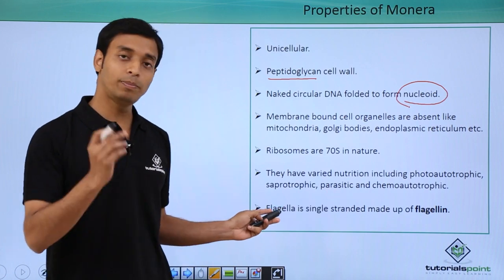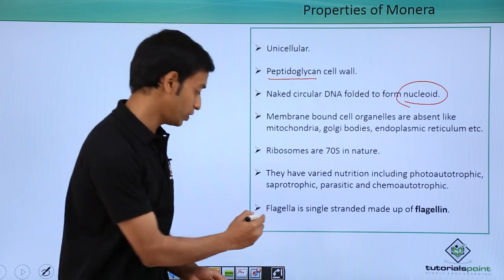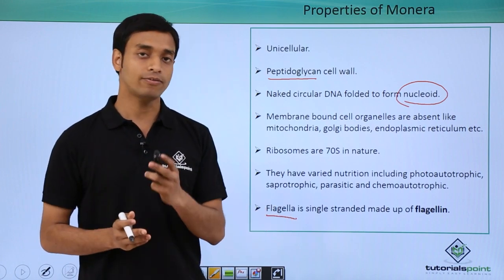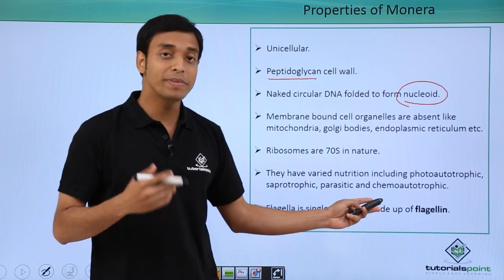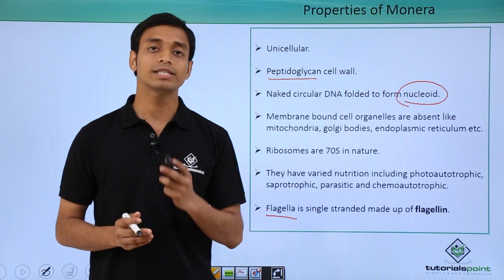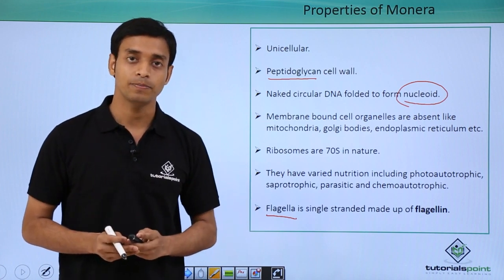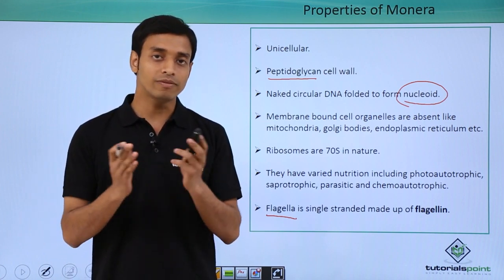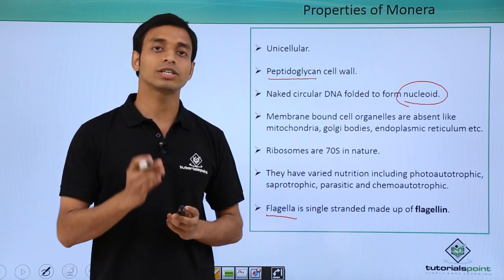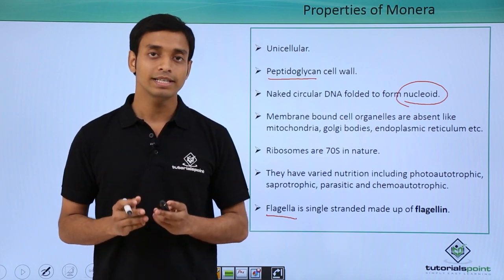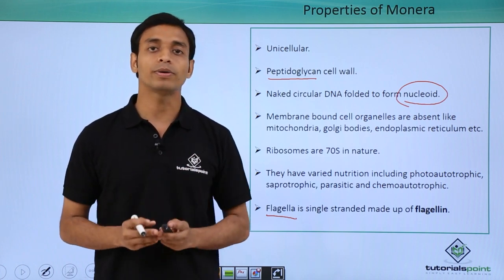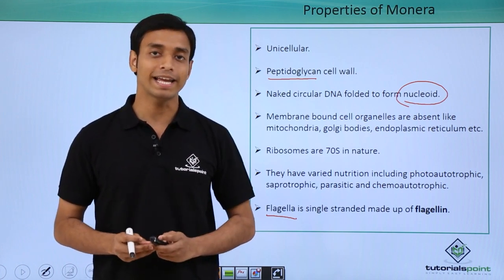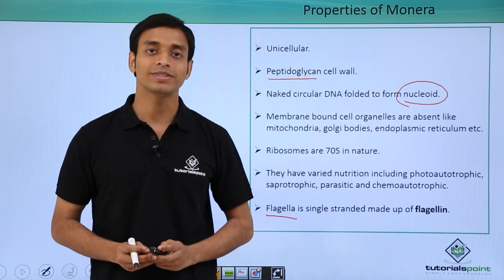Bacteria have whip-like structures known as flagella, which are made up of a protein called flagellin. In this video we have talked about the general properties of the kingdom Monera, that is, the general properties of bacteria. I hope you have understood and liked this video. Thank you.